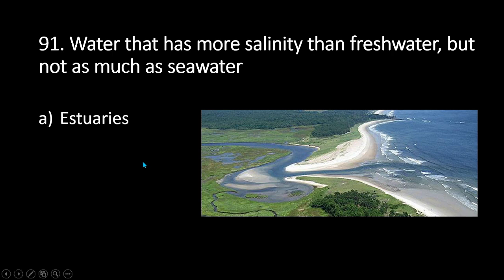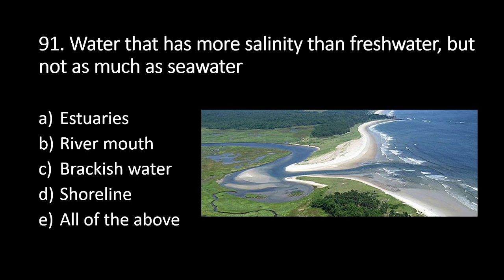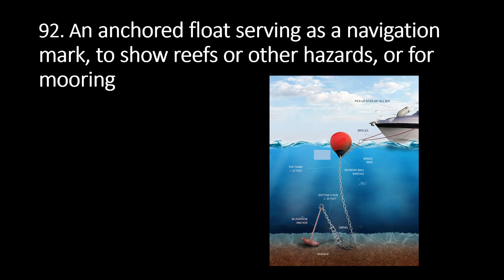Number 91: water that has more salinity than fresh water but not as much as seawater is called A. Estuaries, B. River mouth, C. Brackish water, D. Shoreline, E. All of the above. The answer is C. Brackish water. Brackish water is water that has more salinity than fresh water but not as much as seawater.